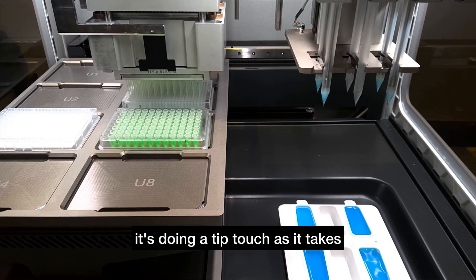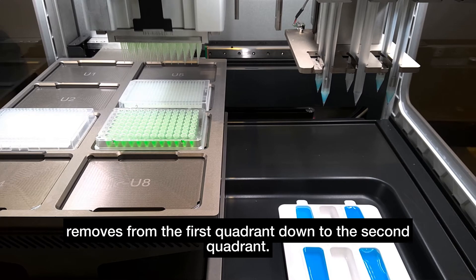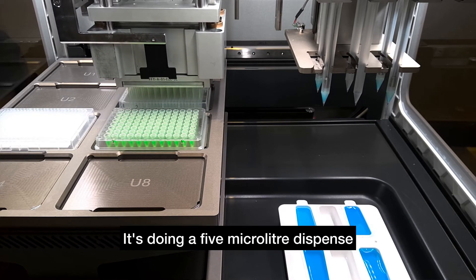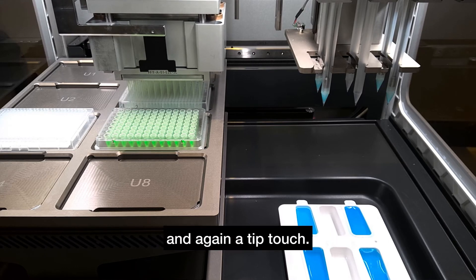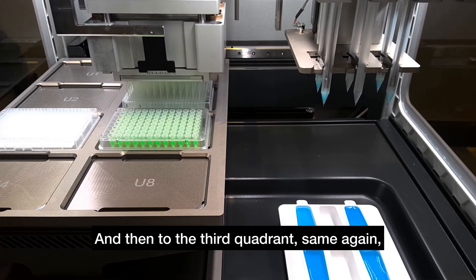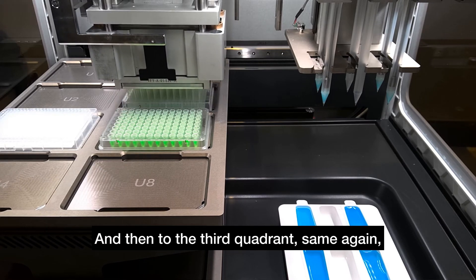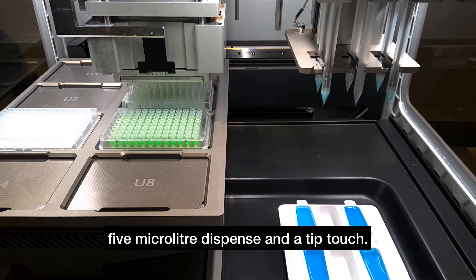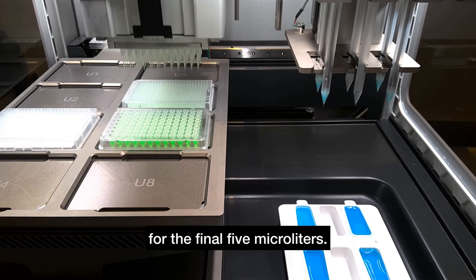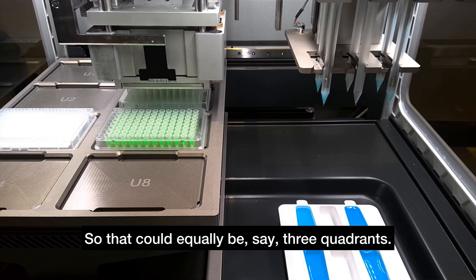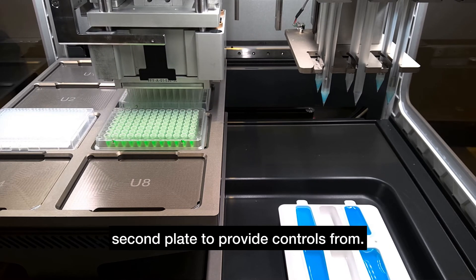It's doing a tip touch as it removes from the first quadrant, now into the second quadrant with a five microliter dispense and tip touch, then to the third quadrant with the same five microliter dispense and tip touch, and finally the fourth quadrant for the final five microliters. That could equally be three quadrants and then a second plate to provide controls.